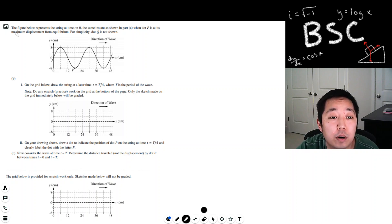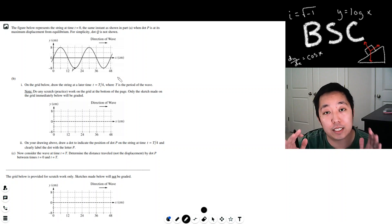Okay. The next part: figure below represents string at time t equals zero, same instant when dot P is at maximum. On the grid below, draw the string at a time later, T equals big T over four, where T is the period of the wave. So if it were a full T, it would be the exact same wave, right? Because that's what it means to be periodic.